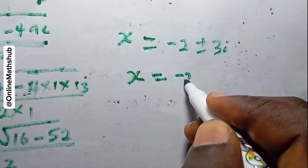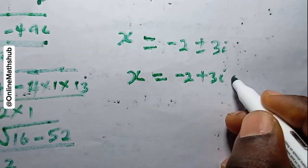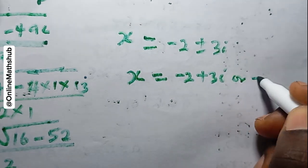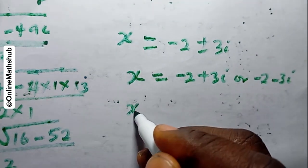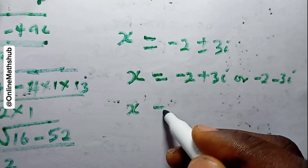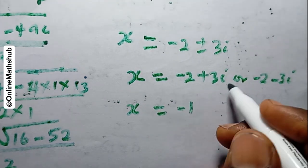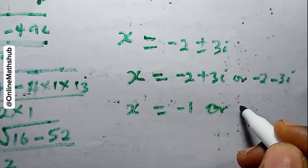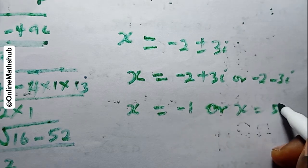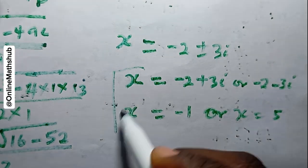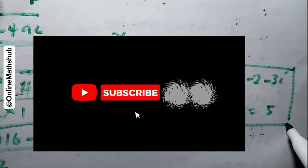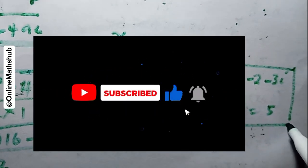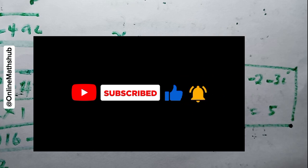So the remaining two values are x = -2 + 3i and x = -2 - 3i. Combined with the earlier results x = 1 and x = -5, these are all four roots of the equation. Let me know if you've understood, share your thoughts in the comments, subscribe, like the video, and see you in the next one!